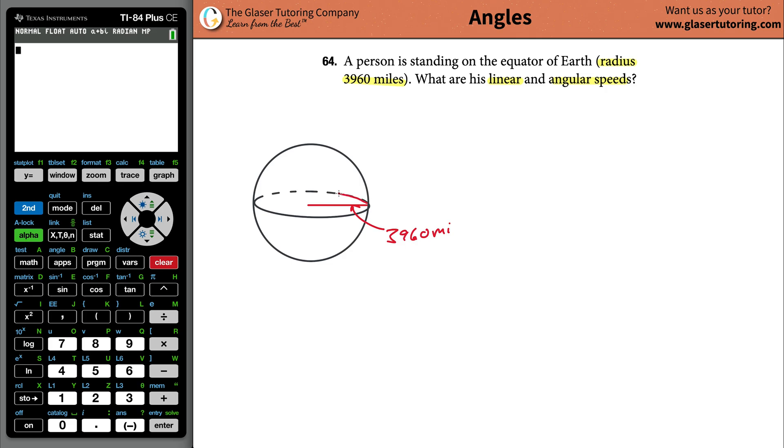Well, what's the distance of this outer edge of the circle? You could have also done it this way, I mean it really doesn't matter. Either way, what's the linear distance of that edge? What's the length of the edge of a circle called? It's called the circumference.